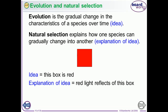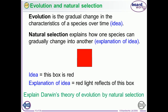When writing about evolution, it's important to know the difference between evolution and natural selection. Evolution is the gradual change in characteristics of a species over time — that is the idea, the theory — but natural selection is the explanation for how evolution occurred. Natural selection explains how one species can gradually change into another. In other words, it's the theory of evolution explained by natural selection, and this was the idea that Darwin came up with.